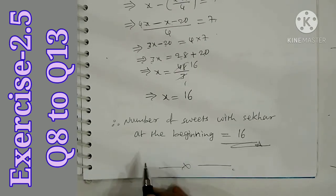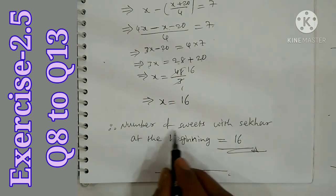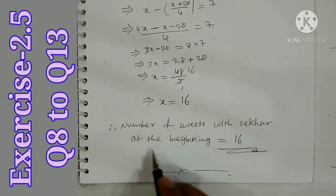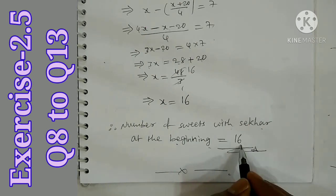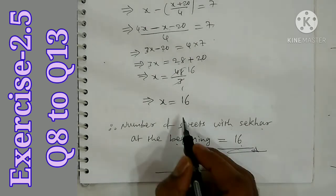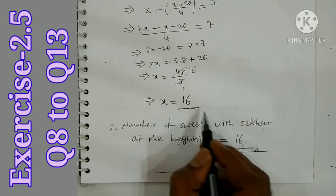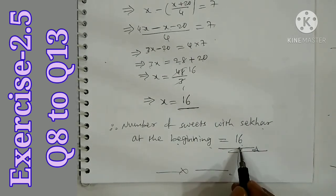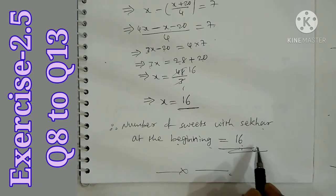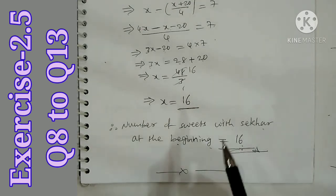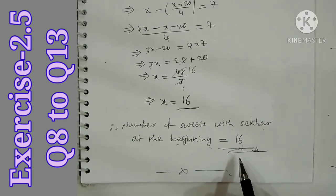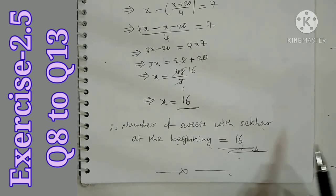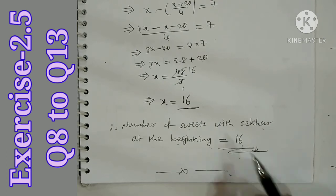Therefore, the number of sweets with Shaker at the beginning is 16. Verification: 16 sweets, give 1 fourth (4 sweets) to Renu, then 5 to Raji, and 7 are left.